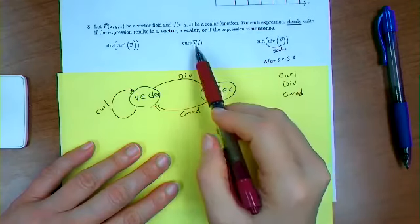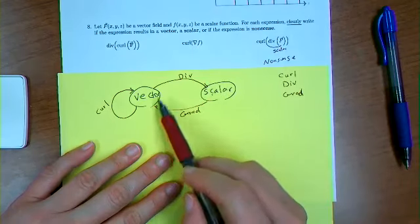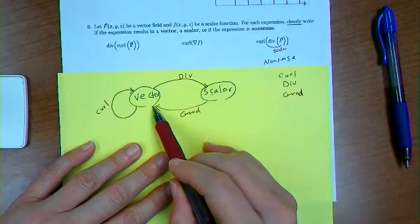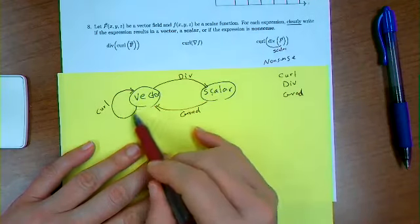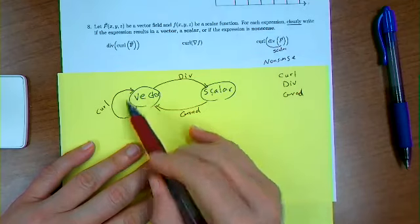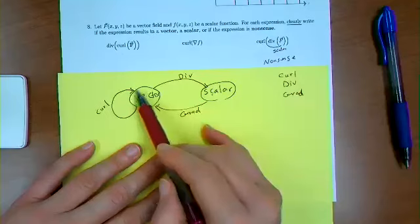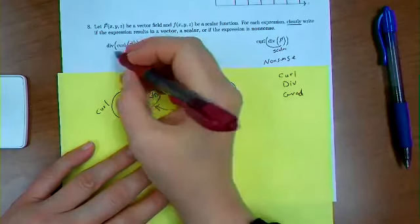But over here, gradient of f gives a vector, and I can go, see, comes from a scalar, goes to the vector, and then from vector, and where it ends up, a curl can start. Or over here, curl goes from here to here, and then divergence can start from vector, so both of those make sense.